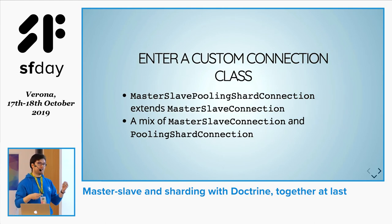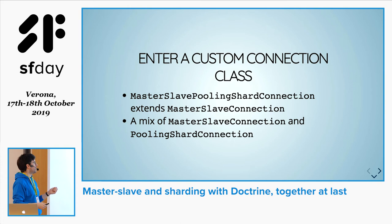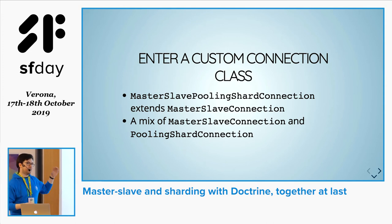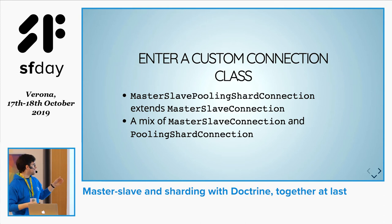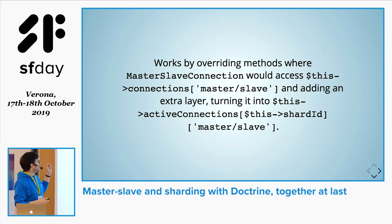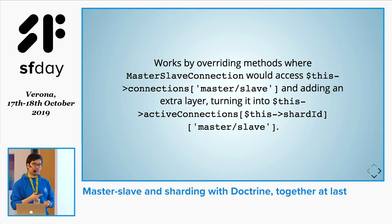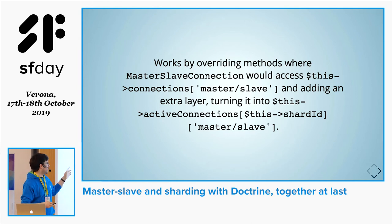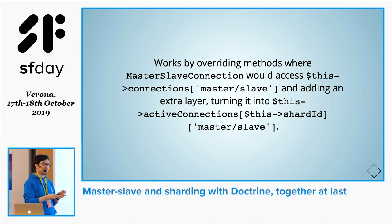The main thing in this whole process was the custom connection class, named MasterSlavePoolingShardConnection. It's basically a mix of the two connection classes provided by Doctrine — it inherits everything from the master-slave class, and then we copy-pasted what we needed from the PoolingShardConnection class. The real customization was overriding the instances where the connection property was accessed, changing it to use another property called active connections, which we handle manually. It's mostly the same, just with an extra layer using the shard ID.